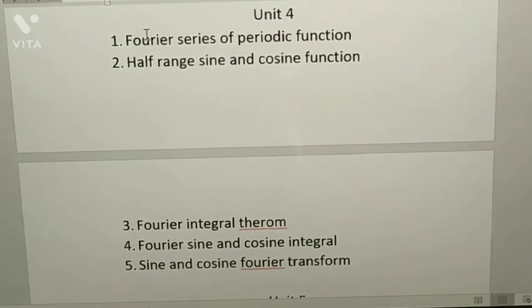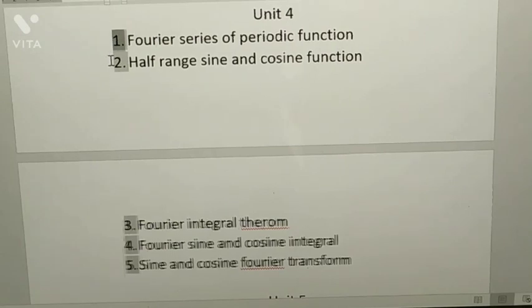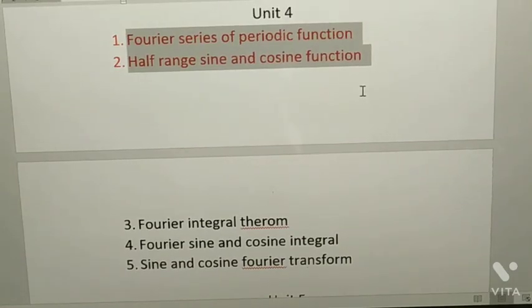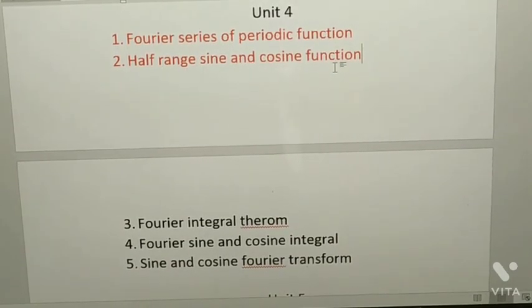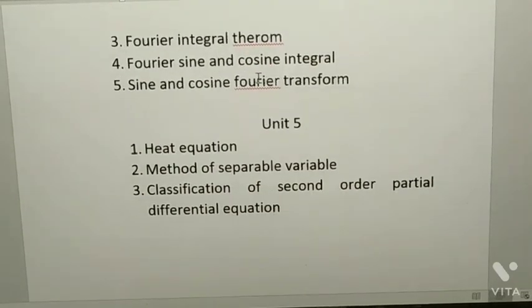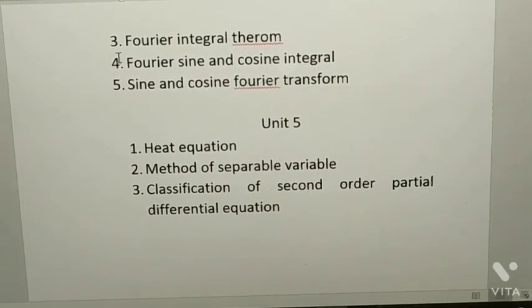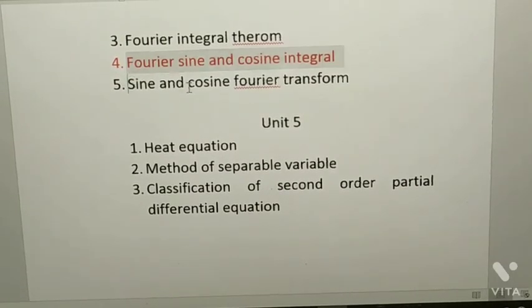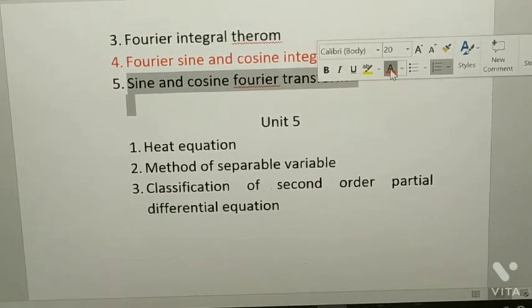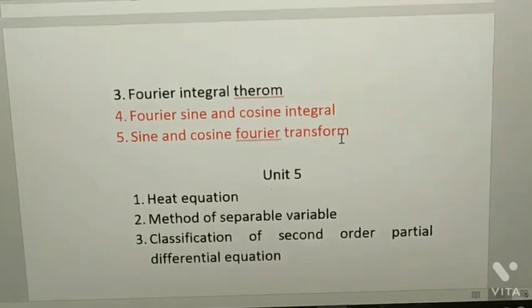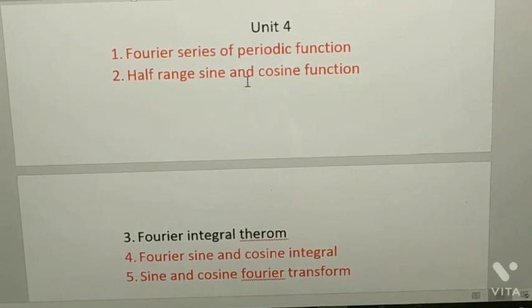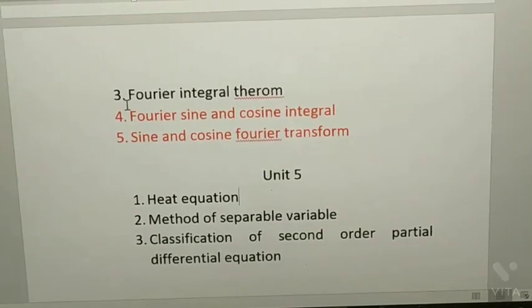From unit four, Fourier series of periodic functions — prepare problems on this. Next, half-range sine and cosine functions. Next, Fourier sine and cosine integrals, and sine and cosine Fourier transforms — these are the important questions highlighted. So totally from unit four: Fourier series of periodic functions, half-range sine and cosine, Fourier sine and cosine integrals, and Fourier transforms.